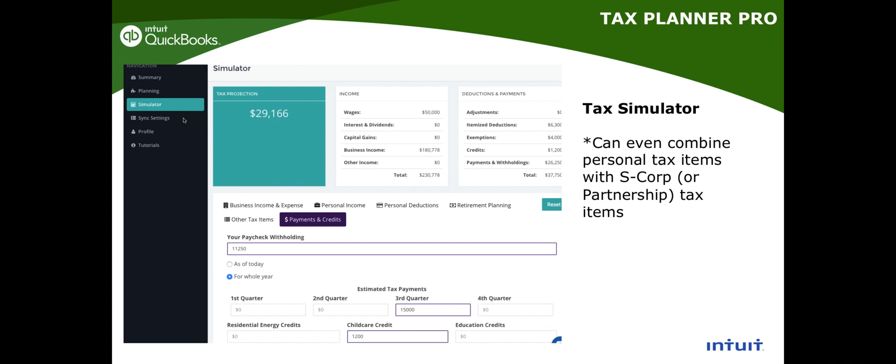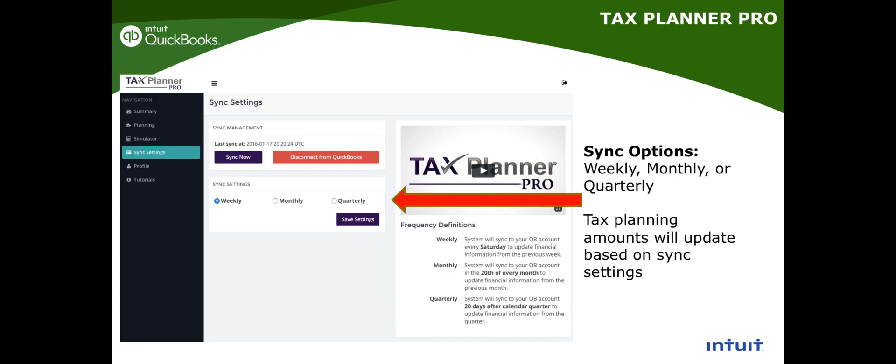Tax Planner Pro also has a tax simulator. You can combine business income and personal income — for example, if you have an S-corporation where the owner has other sources of income, that owner can enter their outside income, their own deductions, and their own estimated payments to get as accurate a projected tax as possible.